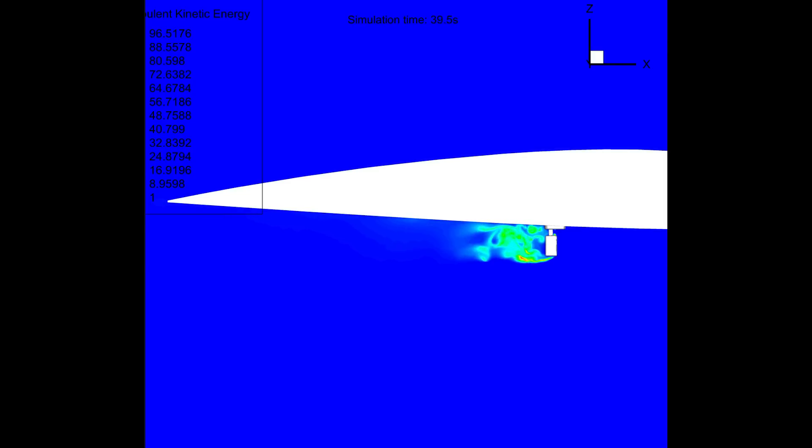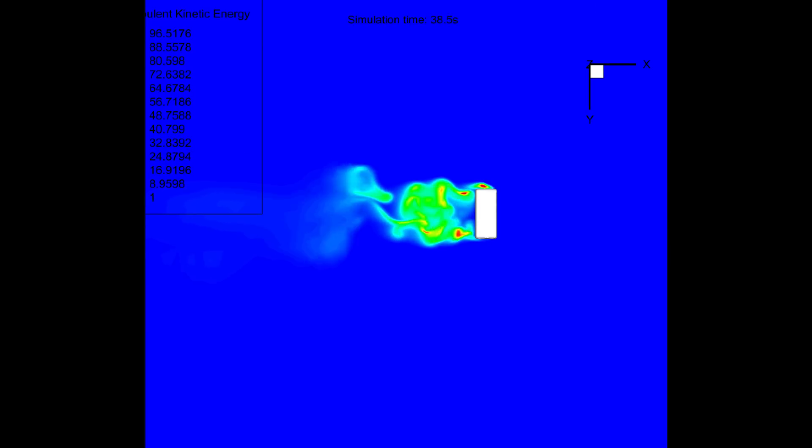When we have a look at the turbulent kinetic energy, which is a measure for the strength of turbulence, it becomes apparent that the camera introduces a lot of it. However, the turbulence dissipates quickly behind the disturbance. This is an indication that even if, for example, the horizontal stabilizer is located a few meters downstream, the effect on it is marginal.